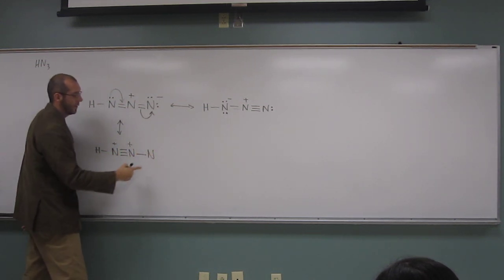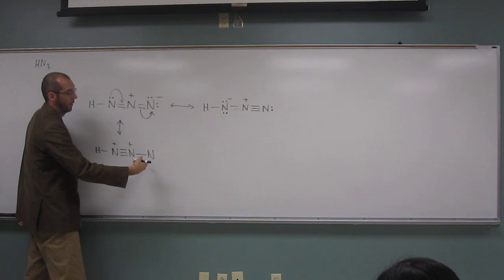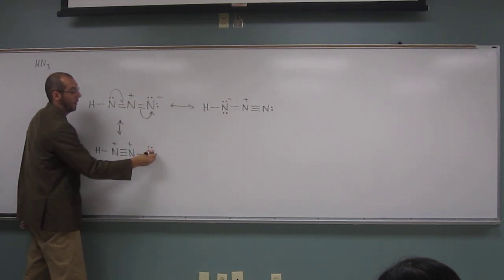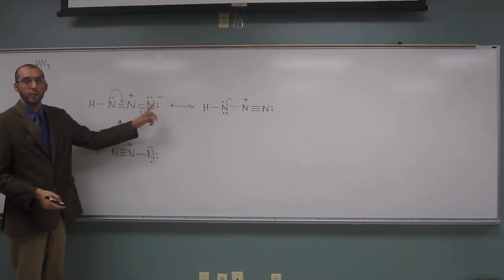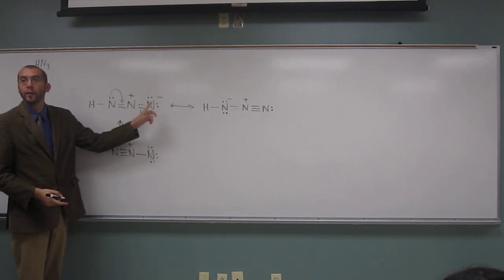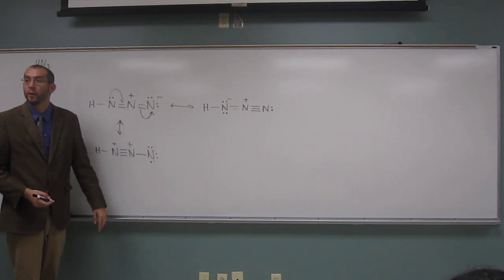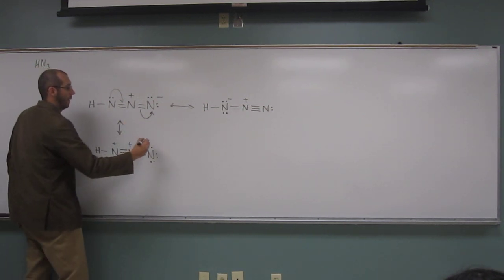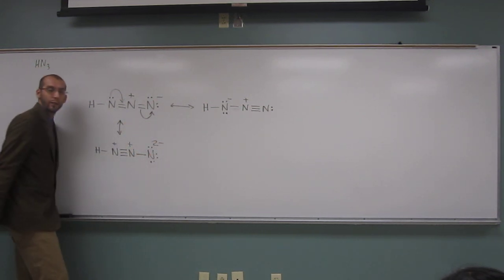And then this has how many lone pairs? Six electrons, but three lone pairs, right? Yeah. So if I have two lone pairs, what's my charge? Negative. Negative. So if I have three, what would it be? Two. Two. Negative two.